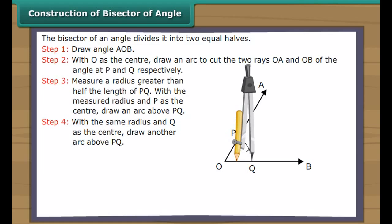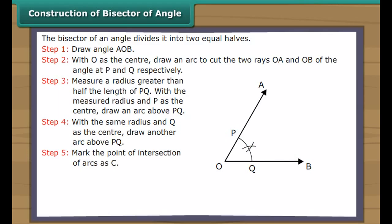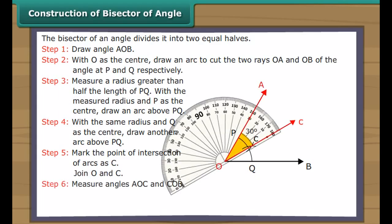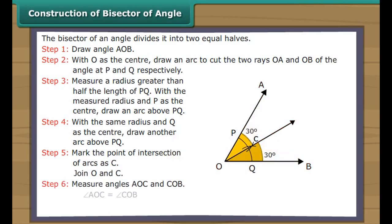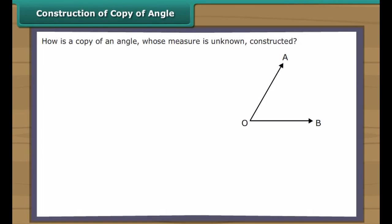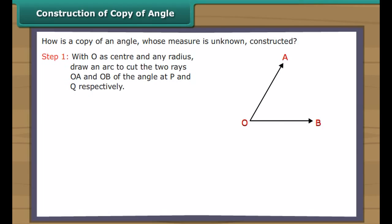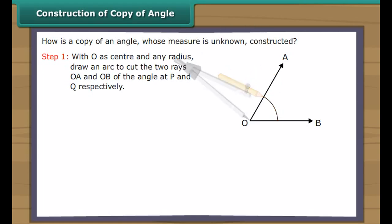Construction of a copy of an angle. How do we construct a copy of an angle whose measure is unknown? Angle AOB is given. With O as centre and any radius, draw an arc to cut rays OA and OB at P and Q respectively. Draw a long line L and mark a point S on it. With OQ as radius and S as centre, draw an arc to cut line L at T. With PQ as radius and T as centre, draw an arc to cut the previous arc at R. Join R to S. Angle RST equals angle AOB.